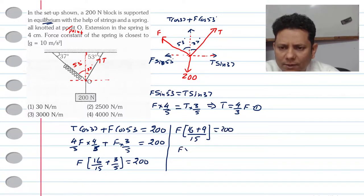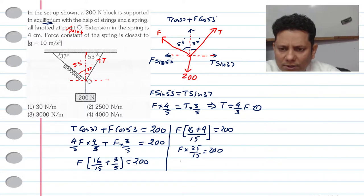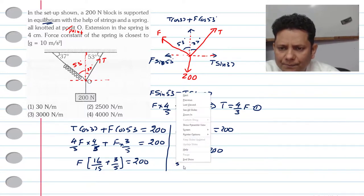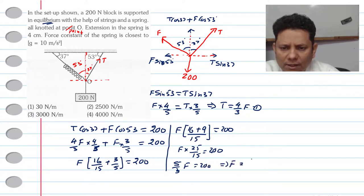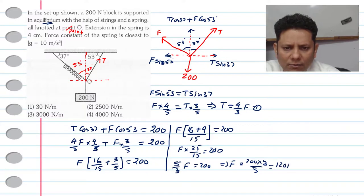F × 25/15 = 200. Simplifying by cancelling 5, we get F × 5/3 = 200, which means F = 200 × 3/5 = 600/5 = 120 N.